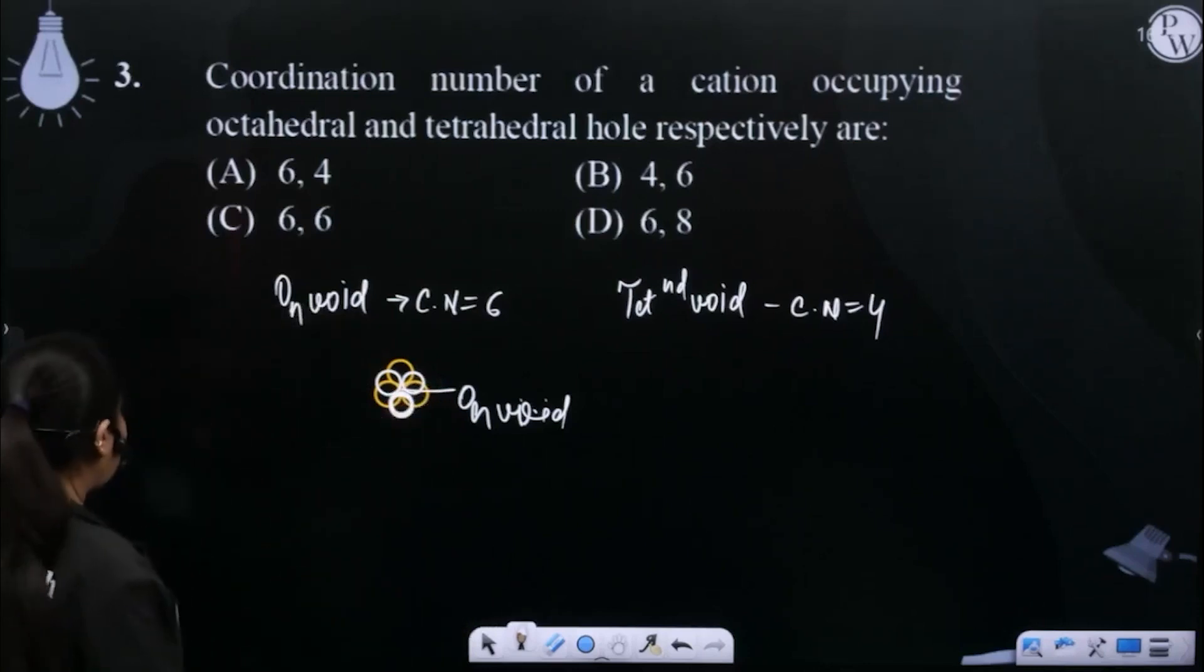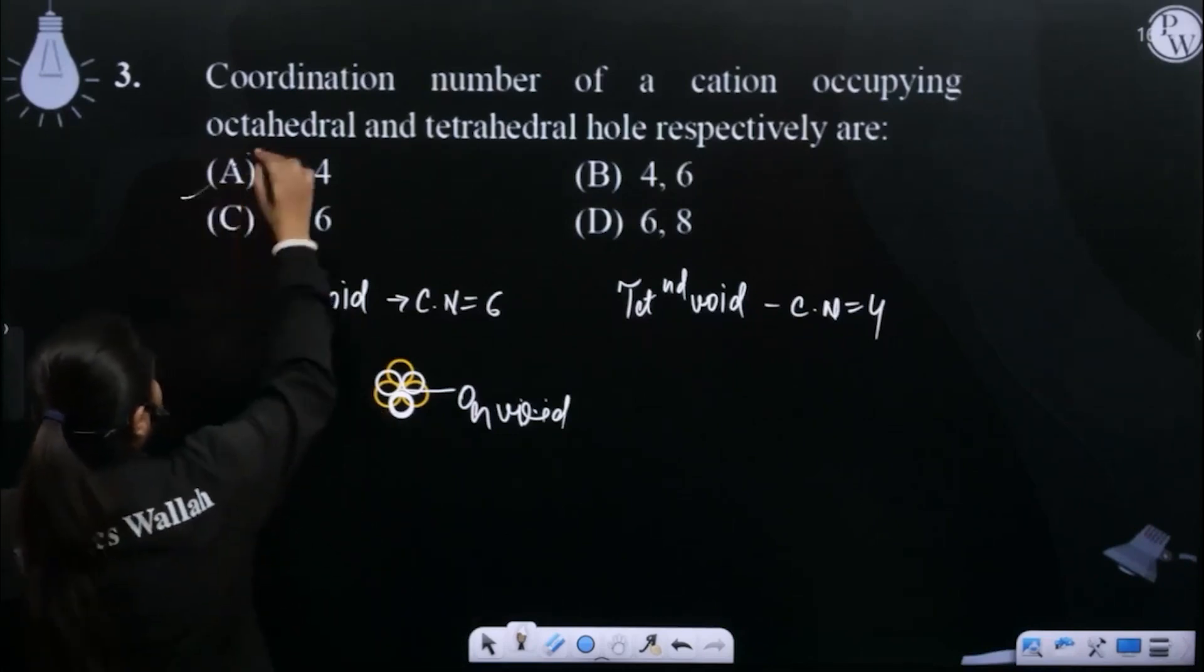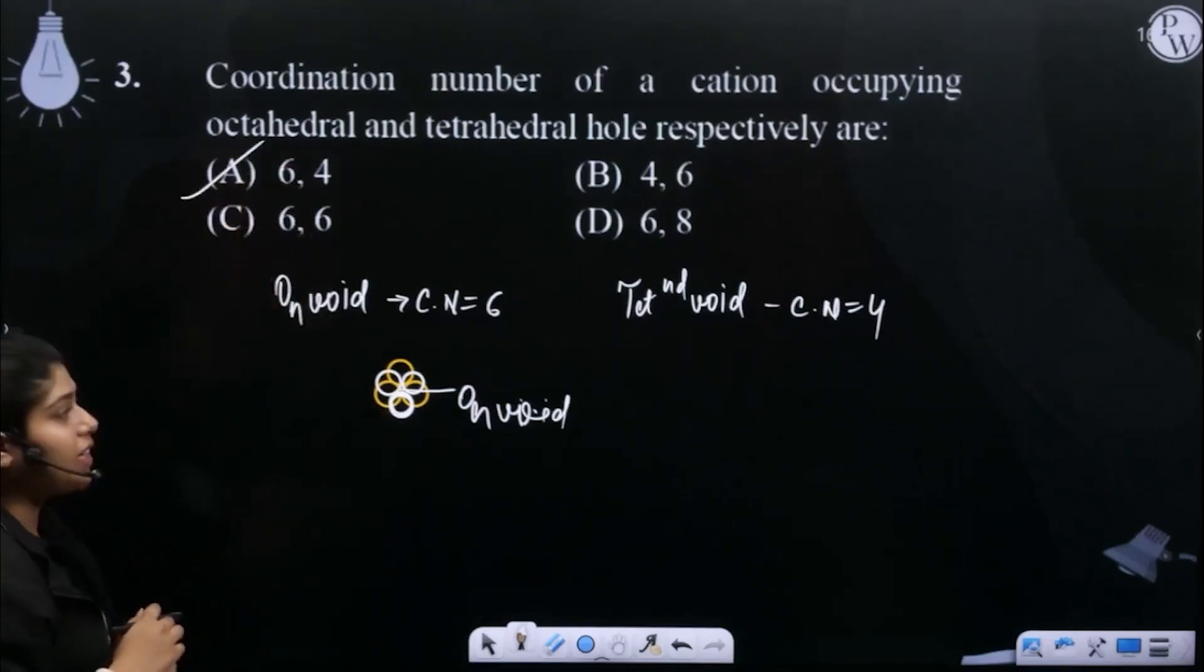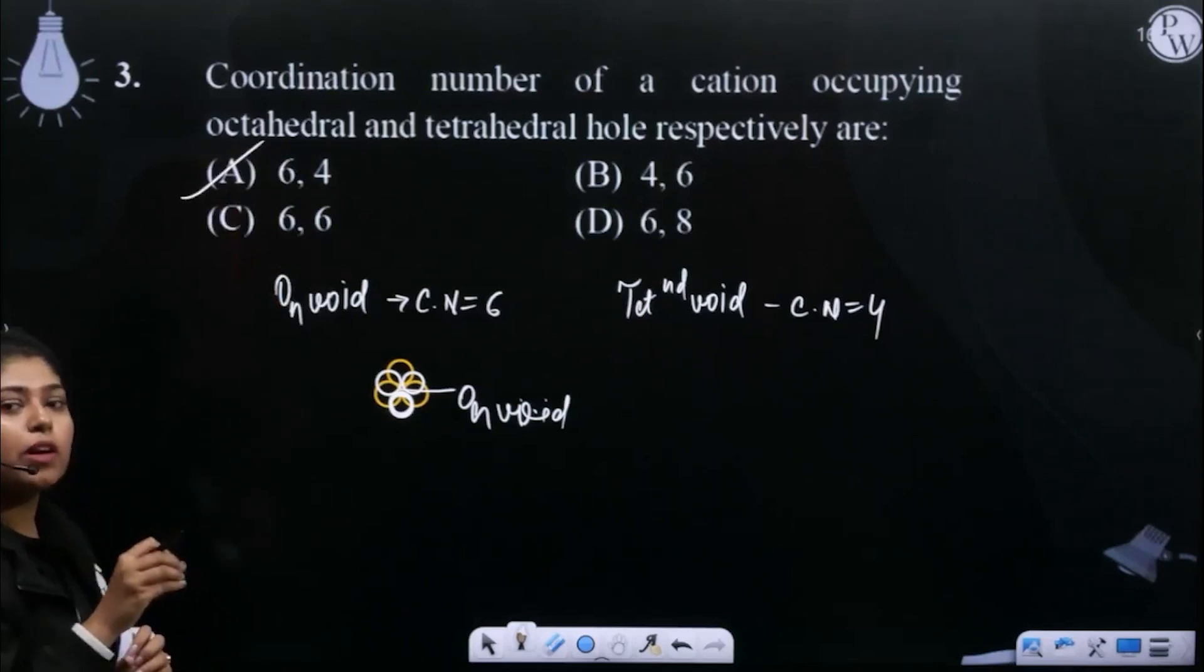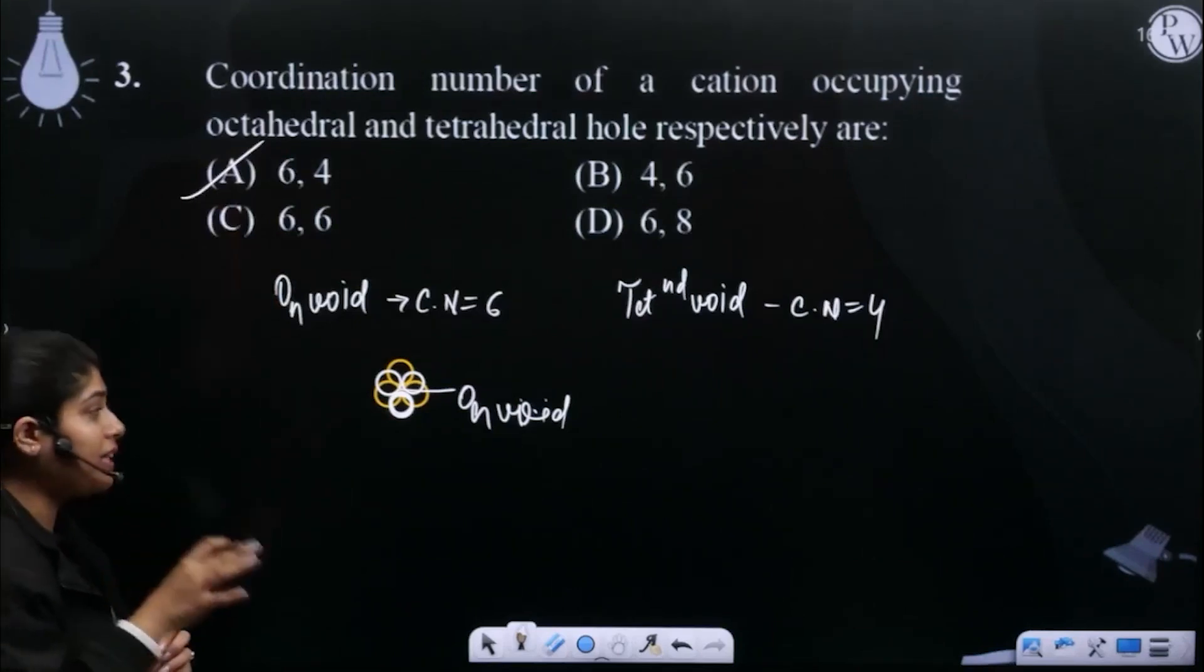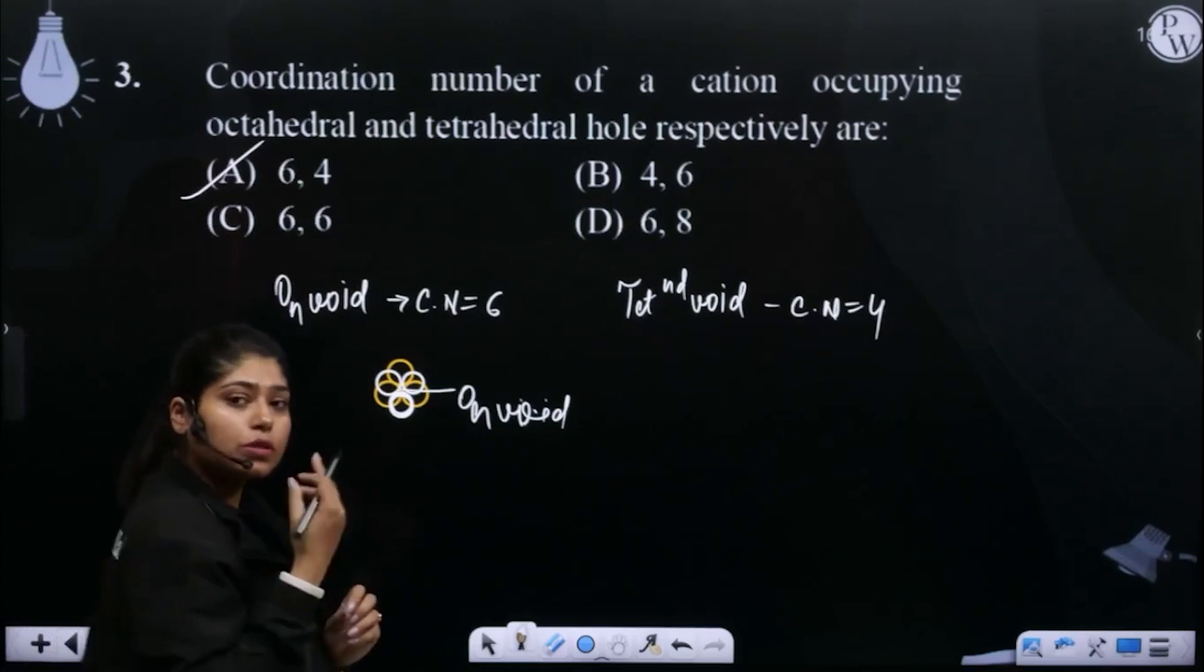Next question. Let's see. What answer will be our octahedral? First of all, it's 6 and 4. Option number A. So particular void - whichever cation in particular void is present, the cation's coordination number is there within the void.